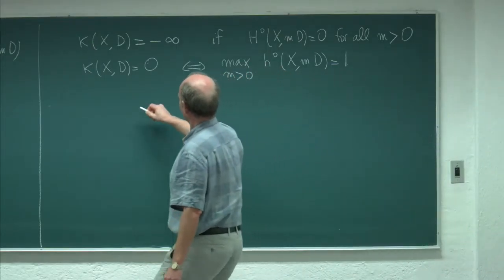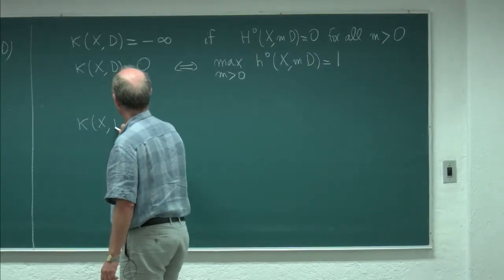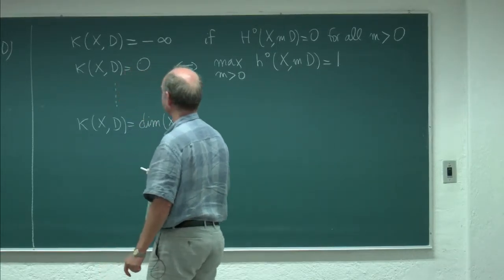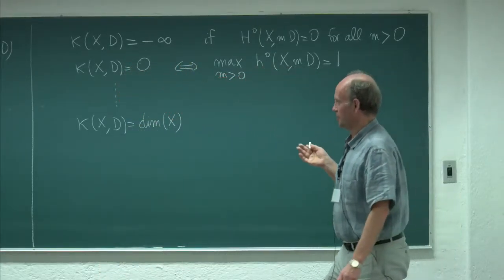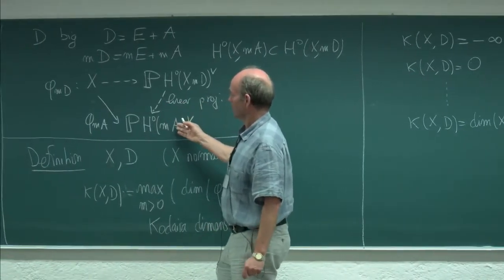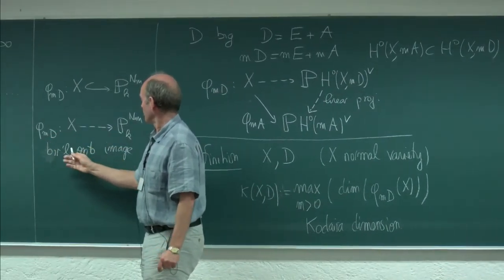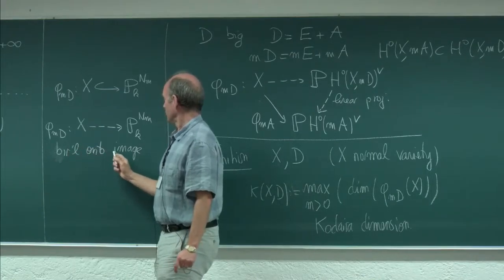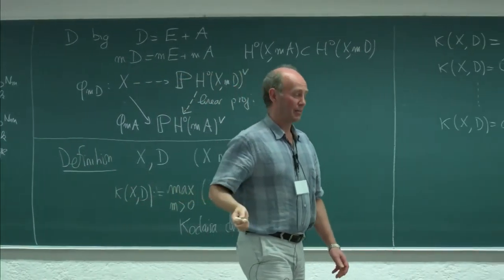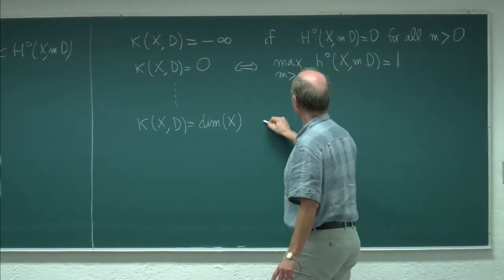At the other end of the spectrum, we have the case where the Kodaira dimension equals the dimension of X. This is the case, certainly, because I just proved it for big divisors. It says that for m large enough, the map here will be birational to its image, meaning the image has the same dimension as X. It's not very difficult to see that this is equivalent to D being big.